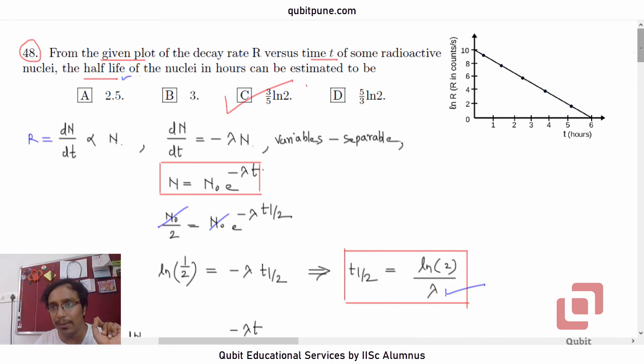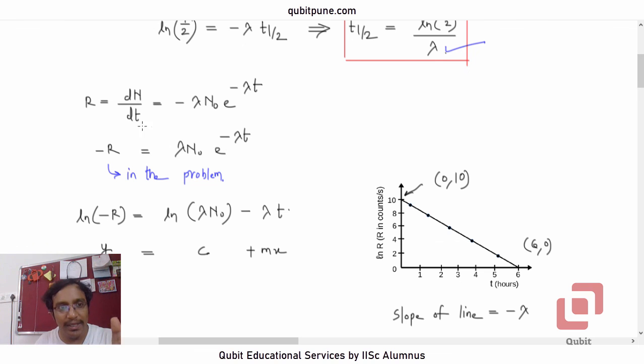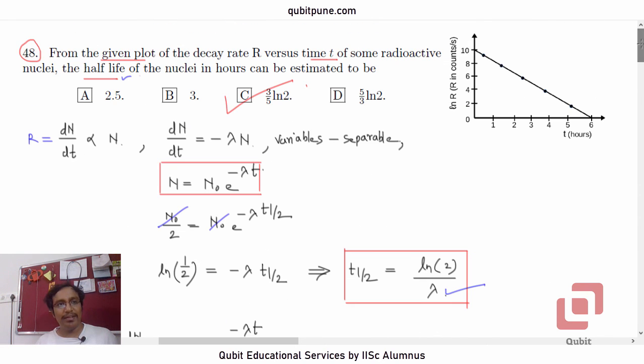I would just like to conclude with one thing. The decay rate is actually negative mathematically. But they have taken it as positive. So I have just shifted the negatives here. Has not made any difference. In the next video, we will solve MCQ number 14.